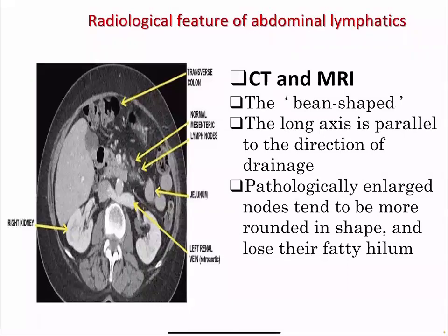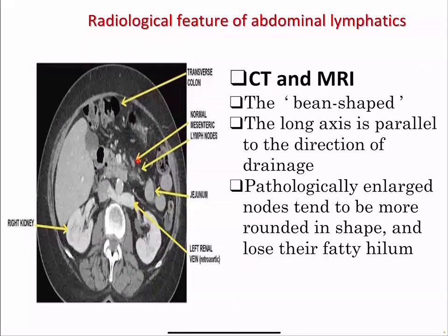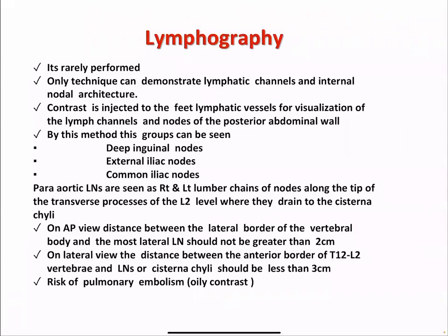Radiological features of abdominal lymphatics — CT and MRI: normal lymph nodes appear ovoid with their long axis parallel to the direction of drainage. Pathologically enlarged lymph nodes are round and lose their fatty hilum. A normal lymph node is longitudinal and contains a hilum. Lymphangiography is rarely performed but is the only technique that can demonstrate lymphatic channels and internal nodal architecture. Contrast is injected into the feet lymphatic vessels for visualization of lymph channels and nodes of the posterior abdominal wall.